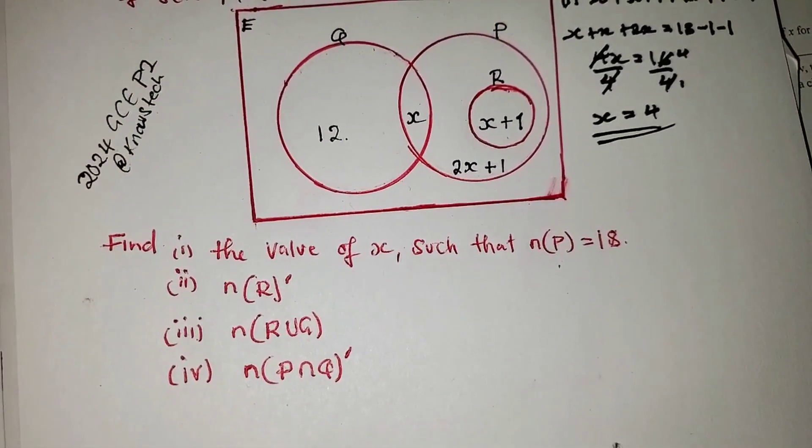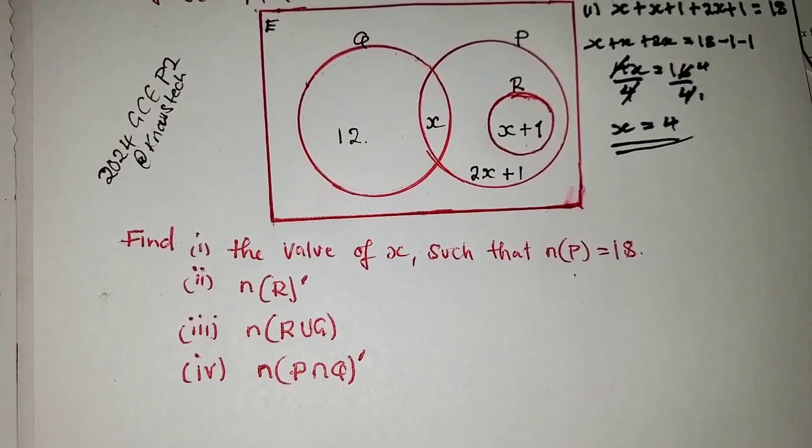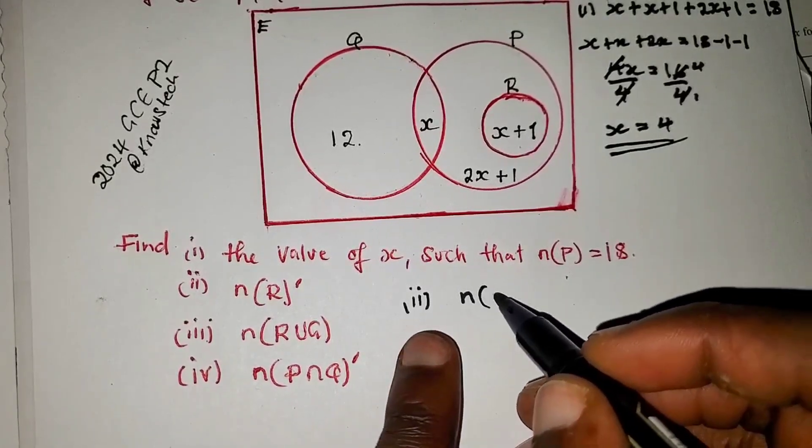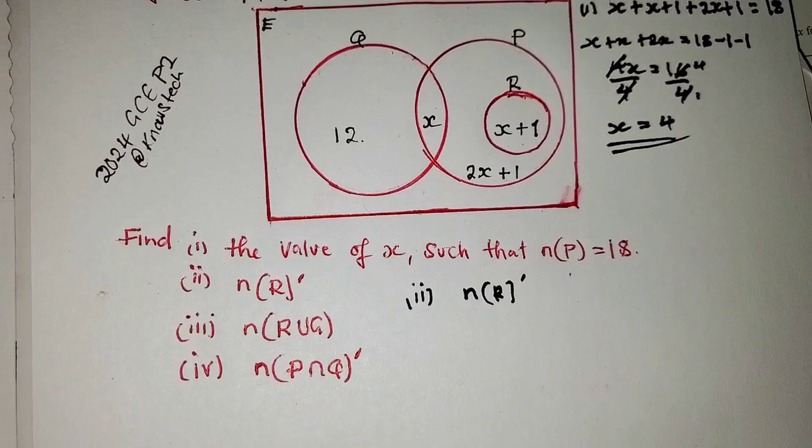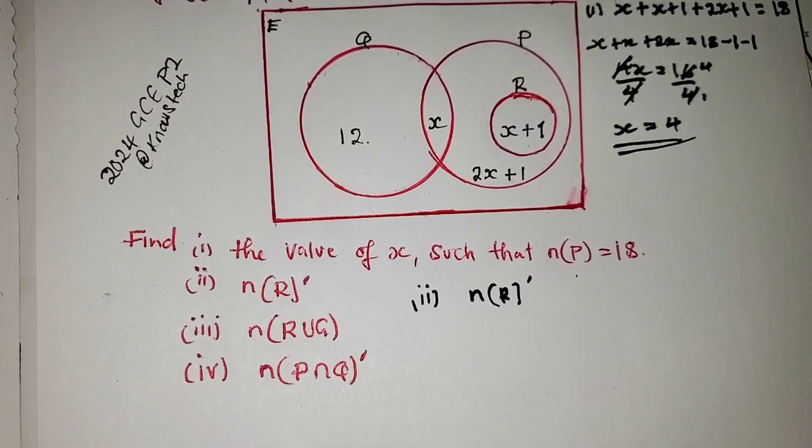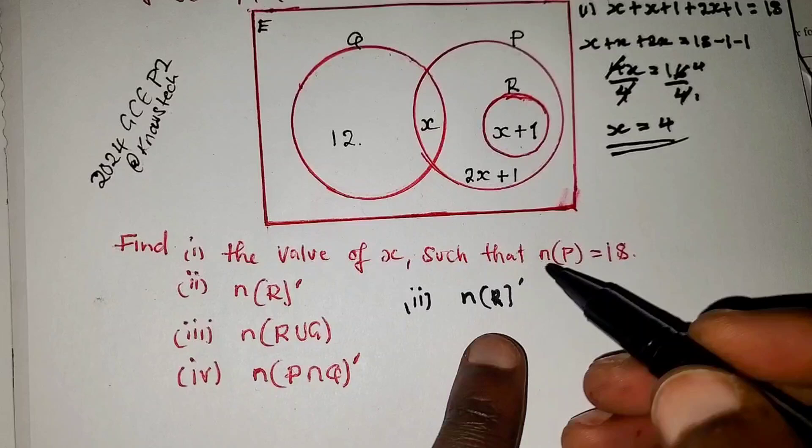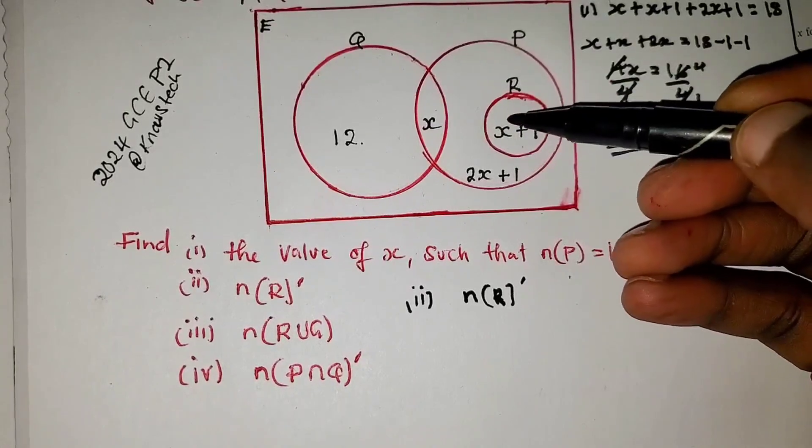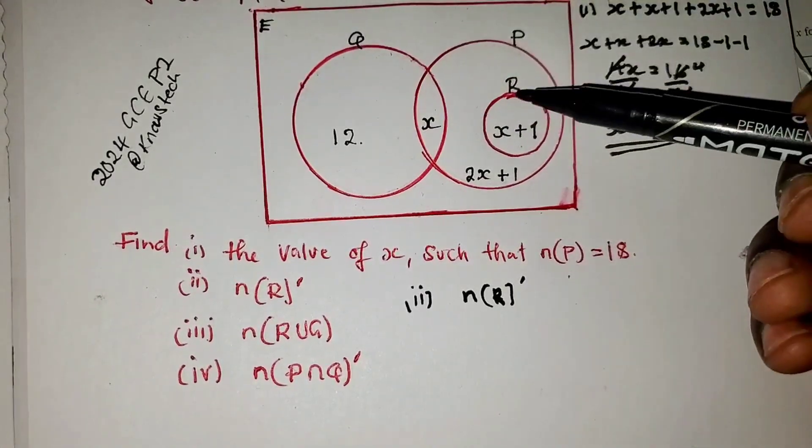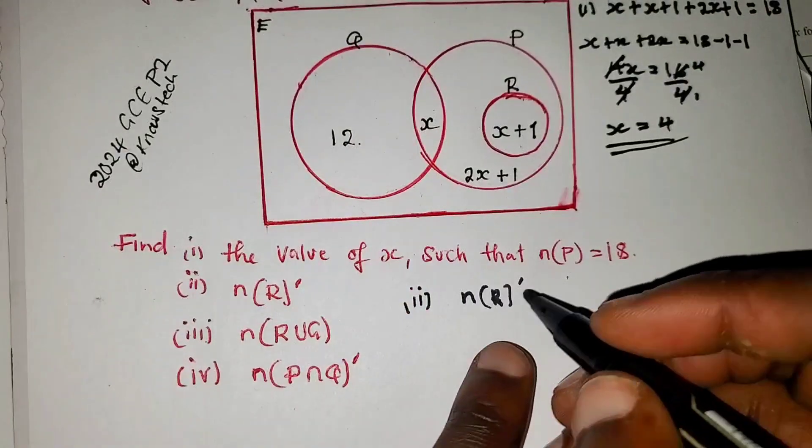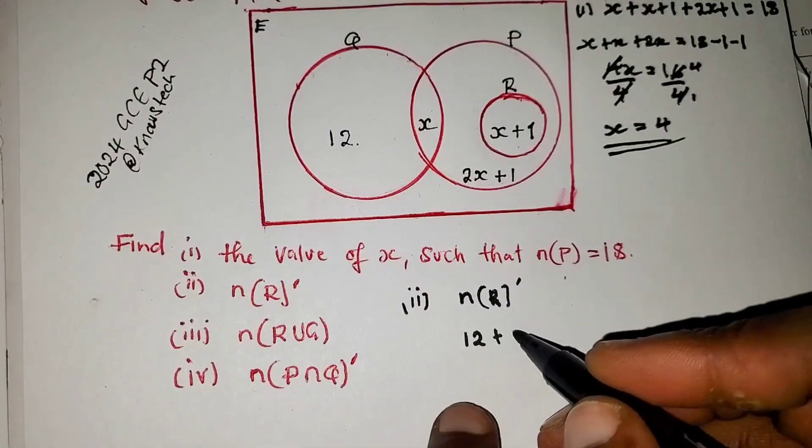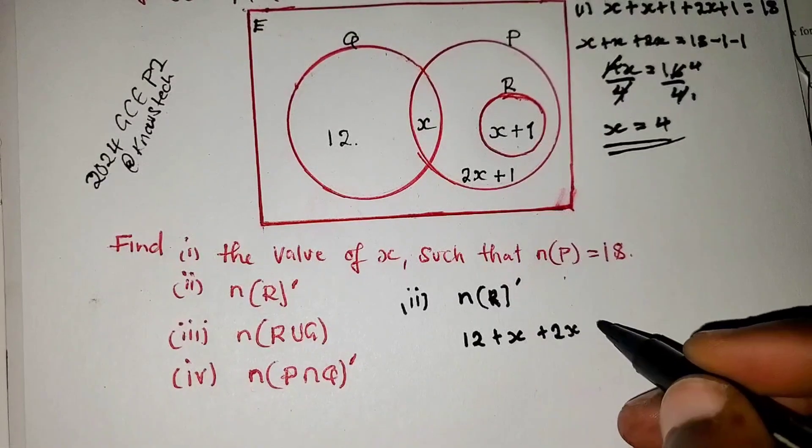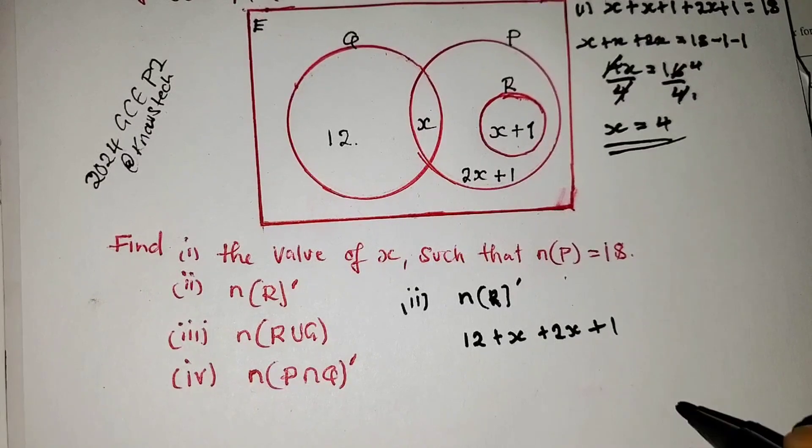Now look at this. The second question is, you have to find the number of elements in R complement. Complement means excluding, not including. So we are not going to include R, set R. So where is set R? Set R is this one, x plus 1. So we are not going to include this one. We are going to add what is outside R. So what is outside R? We have 12 plus x plus 2x plus 1.